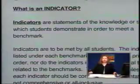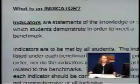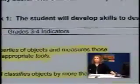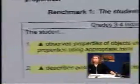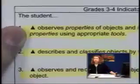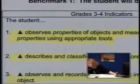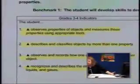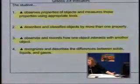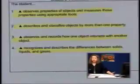There are 22 indicators with a delta and one indicator with an asterisk in the grades 3-4 cluster. These indicators will most likely be the ones used to select the test items for this baseline year. The grades 3-4 indicators for physical science that may be used for testing are — and this is what a delta looks like — the student observes properties of objects and measures those properties using appropriate tools; the student describes and classifies objects by more than one property; the student observes and records how one object interacts with another object; and the student recognizes and describes the differences between solids, liquids, and gases.